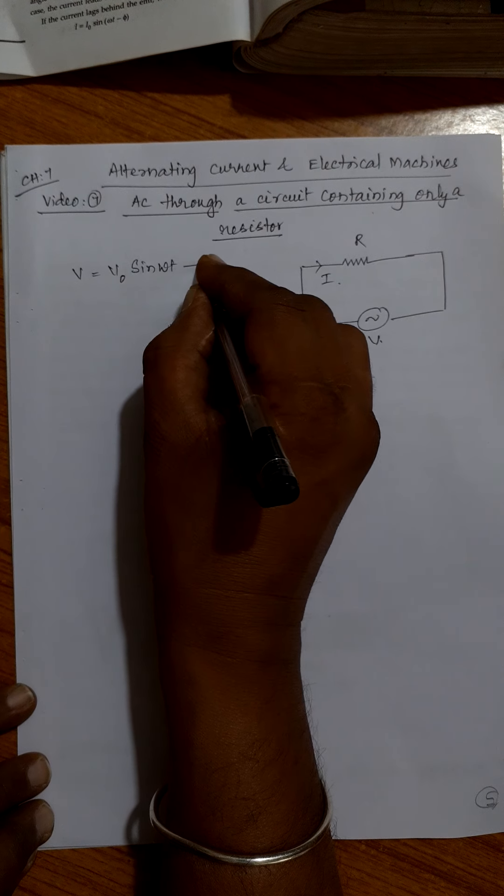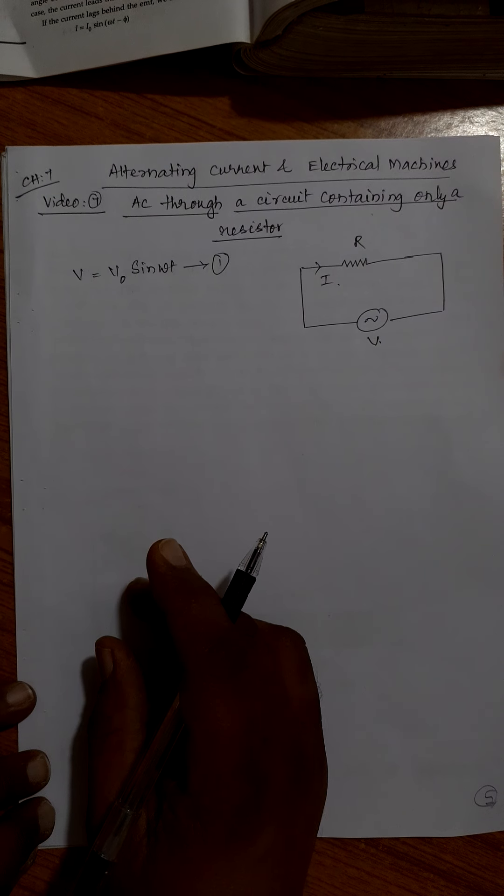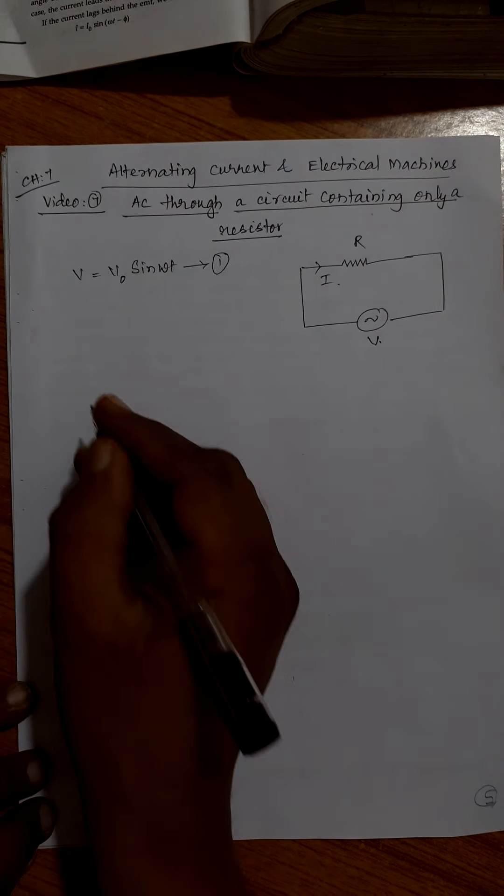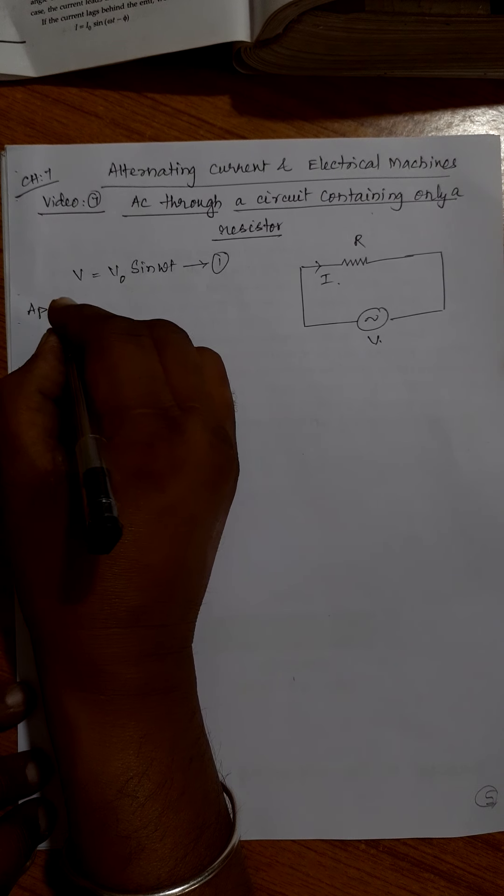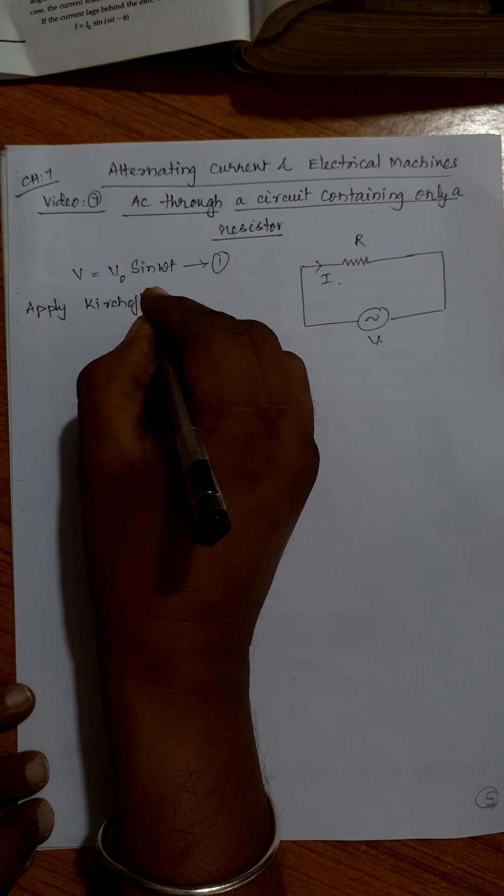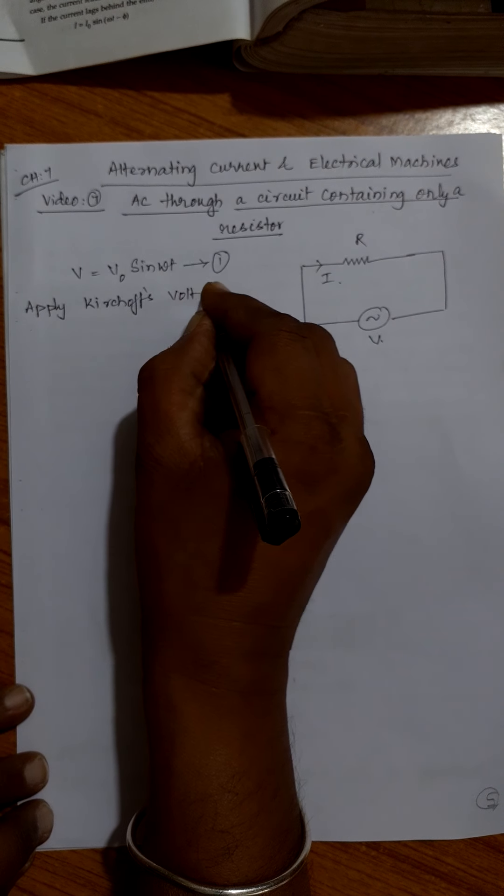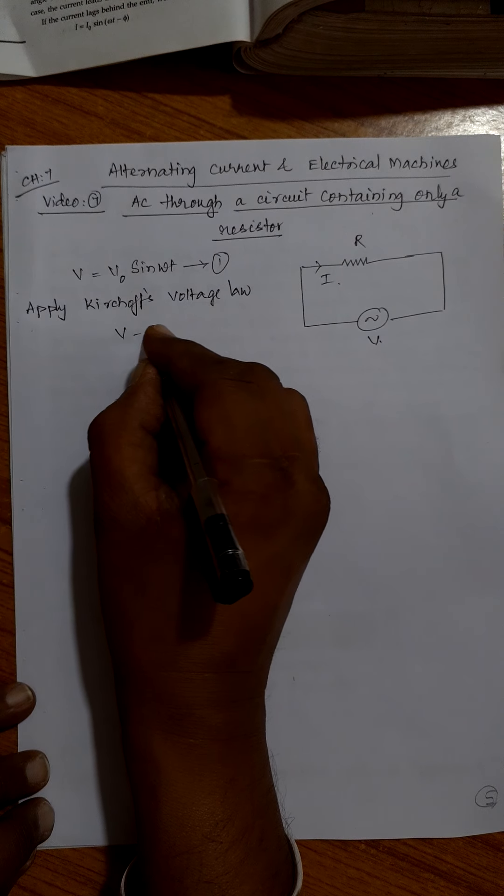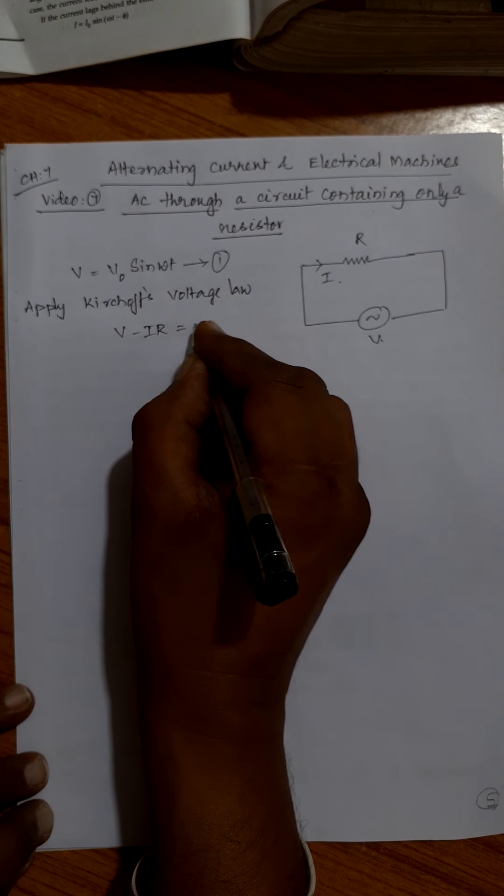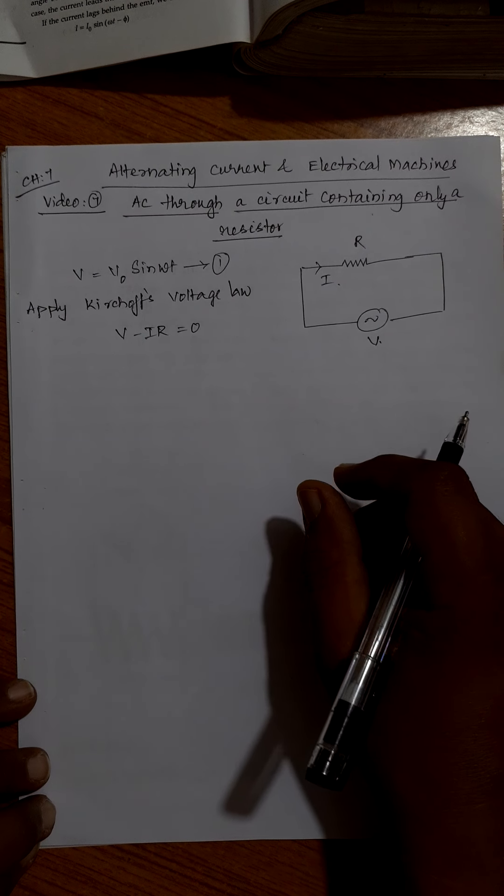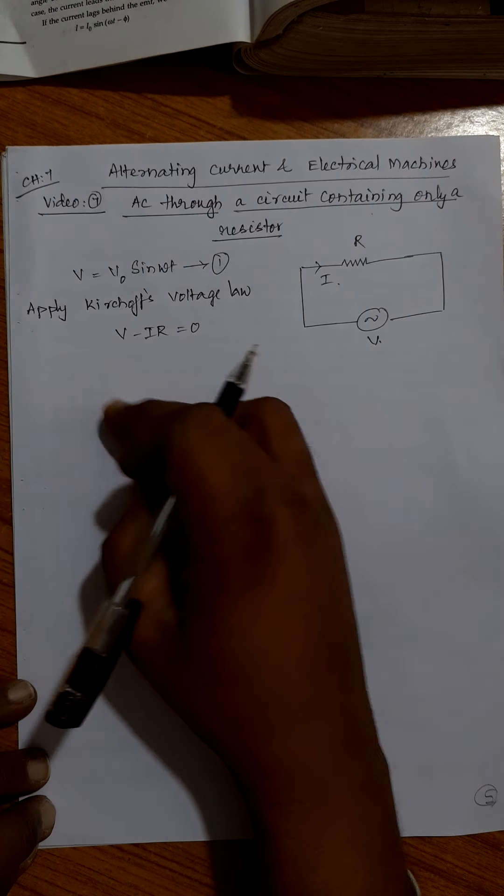So the instantaneous value of alternating voltage, applied voltage is V naught sine omega t. By virtue of which there is some current passing through the circuit. Now apply Kirchhoff's voltage law. V minus IR is equal to zero.